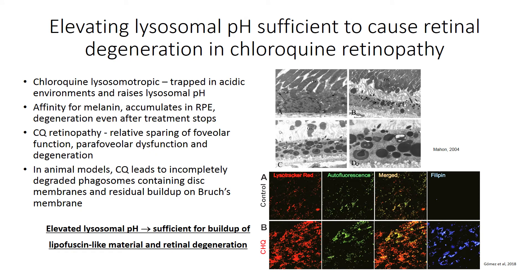Another powerful way to show parallels between lysosomal dysfunction and AMD involves chloroquine retinopathy. Chloroquine is trapped in acidic environments and raises the pH inside them, and has been traditionally used as a tool to raise lysosomal pH in experiments. However, chloroquine or hydroxychloroquine have been used to prevent certain diseases, both for traditional malaria use and some inflammatory autoimmune disorders. Chloroquine retinopathy presents itself in a small proportion of these patients.